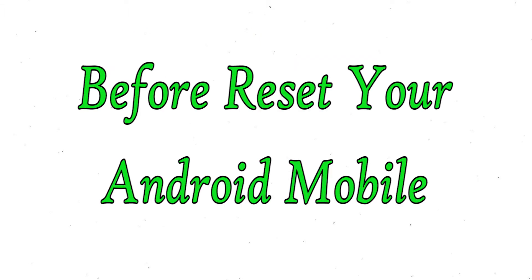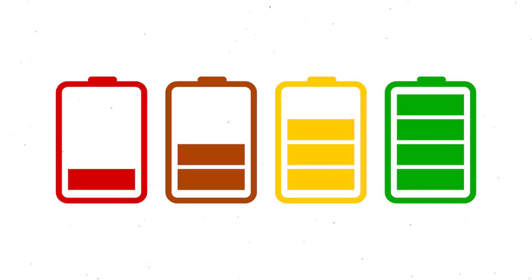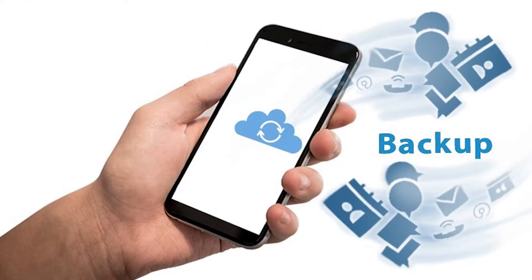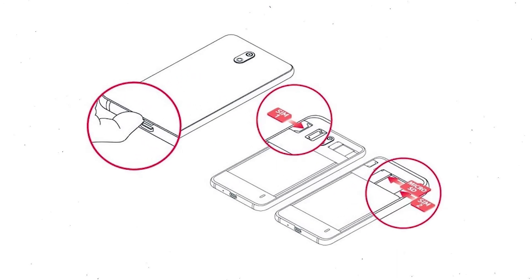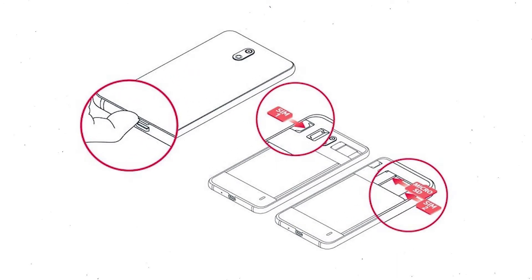Before resetting your mobile, charge your mobile if the battery is less than 50%. You need to make sure that the data on your device is backed up so you do not lose valuable photos or documents. Reset deletes all your mobile data, so you better back up all important data and remove SIMs and SD card.